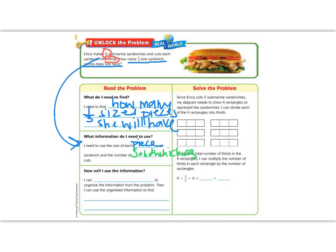Okay, how are we going to use this information? Well, if you remember, back to our objective, we are going to draw a diagram to organize the information. And then we are going to use that information to find the number of one-third-sized pieces.